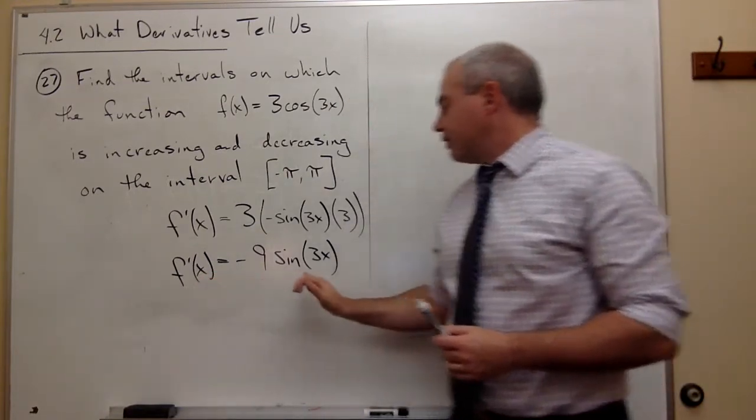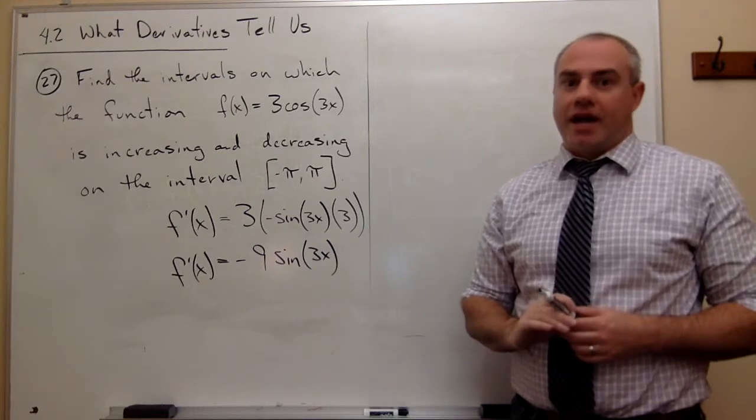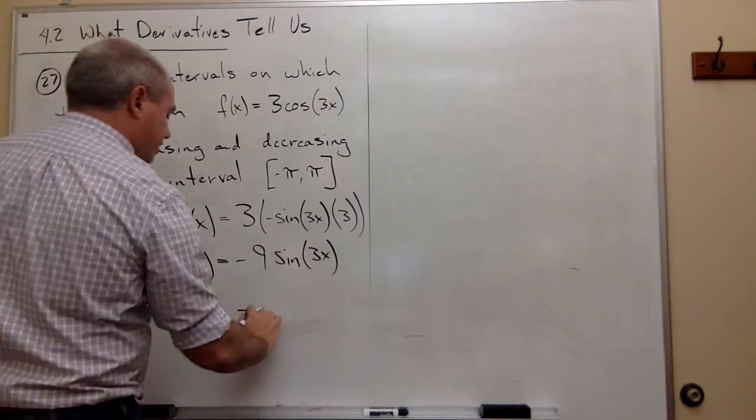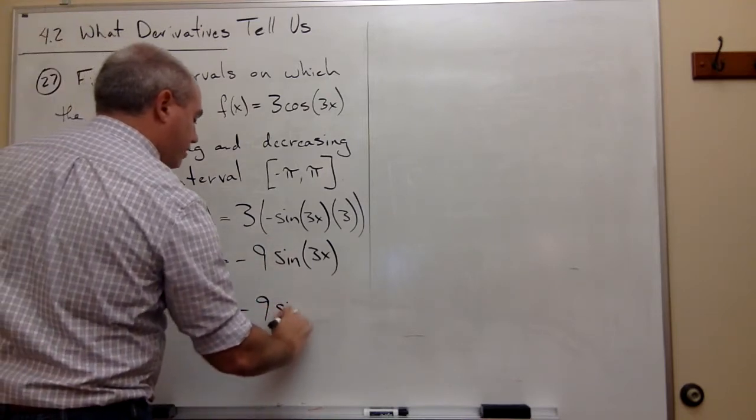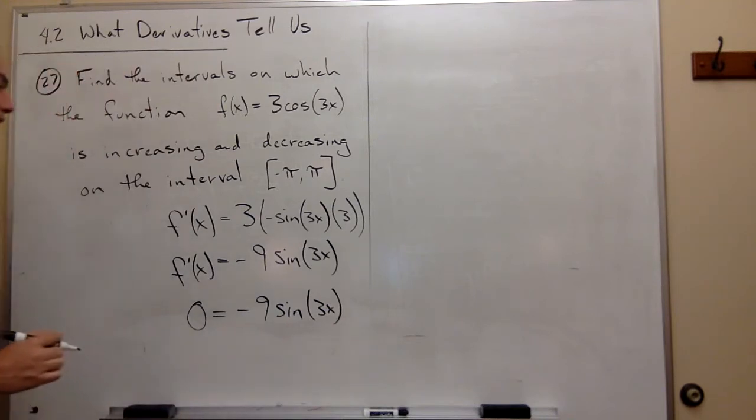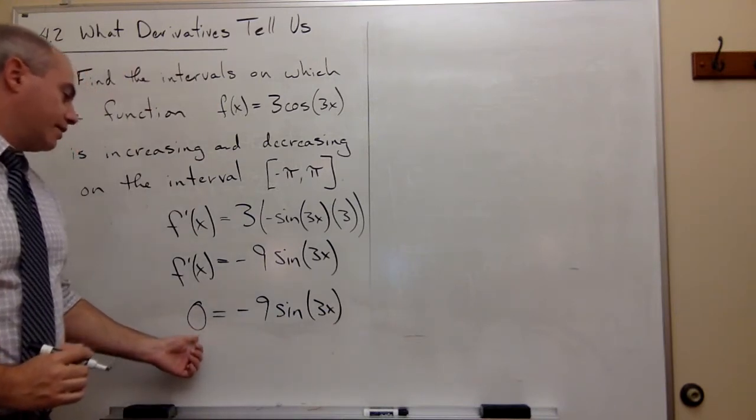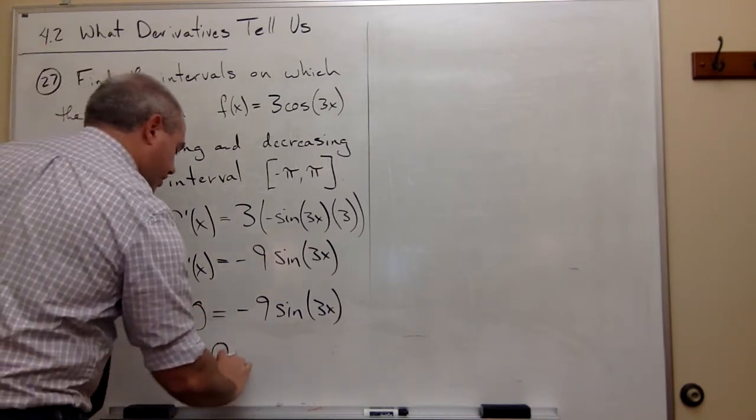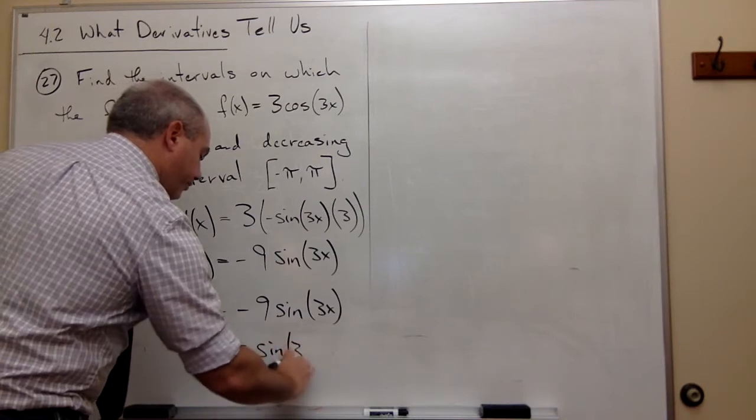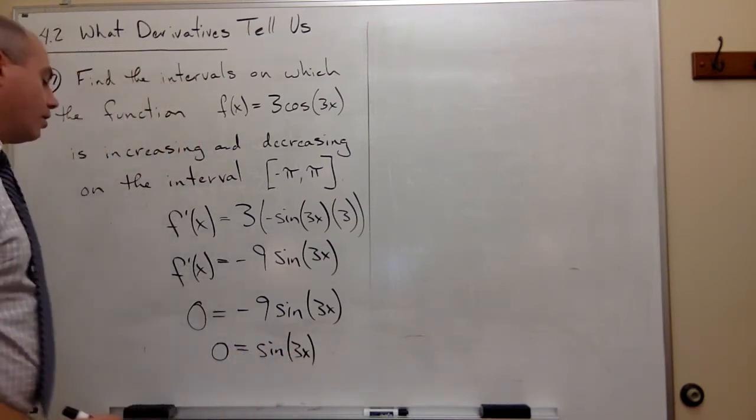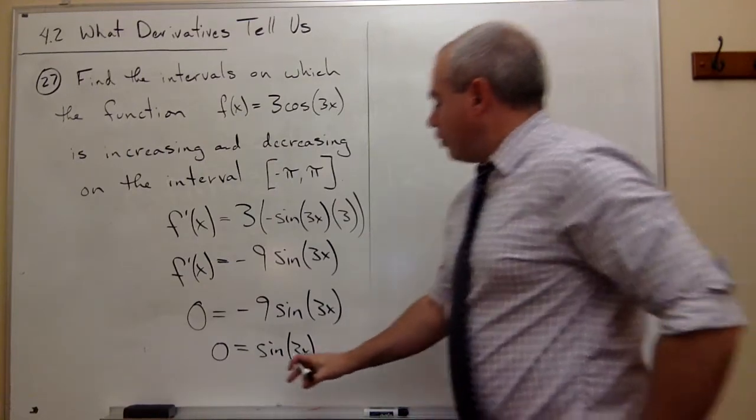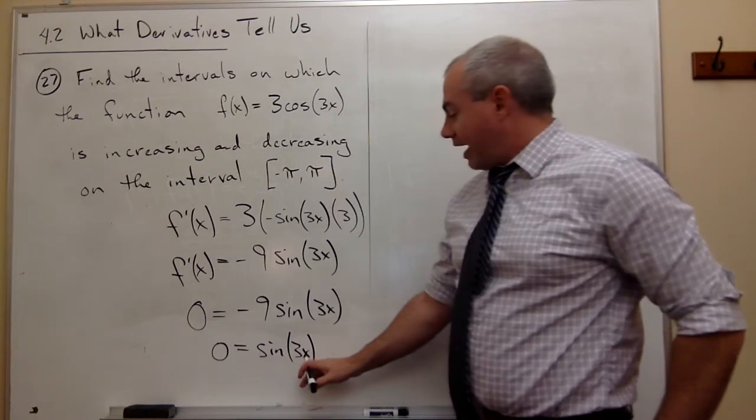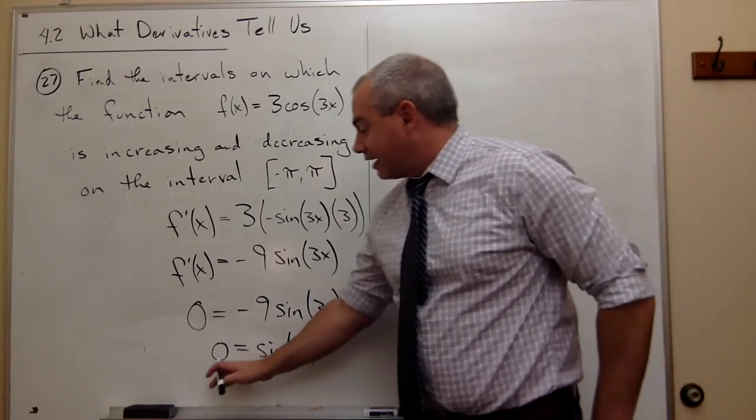I've got a derivative for my function, and now I want to set this thing equal to zero and solve for x. If I set it equal to zero, then I get zero equals negative 9 sine of 3x. I can divide both sides by negative 9, and I just get that zero equals sine of 3x. Now I need to know for what values of x does 3x make sine zero?